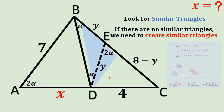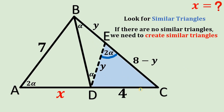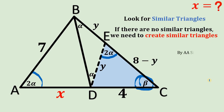Now let's focus on this triangle. We have two alpha. Let's call angle ACB equal to beta. Triangle DEC has angles two alpha and beta. The big triangle ABC also has two alpha and beta. Therefore, using AA similarity, we can say that triangle DEC is similar to triangle BAC. So now we have similar triangles.